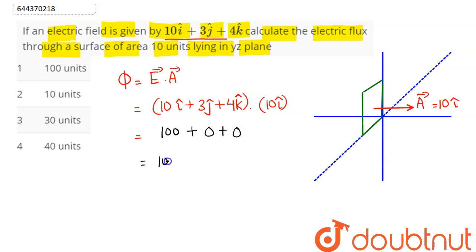So the net flux comes as 100 units, which is option number 1. Hence we can say 1 is the correct answer.